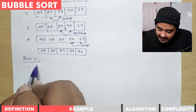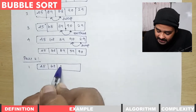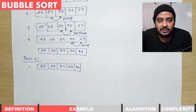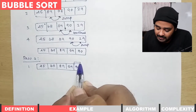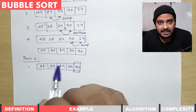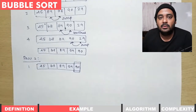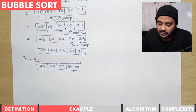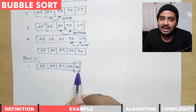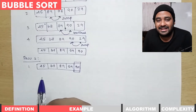For pass two, we take the sorted list from pass one: 45, 68, 89, 29, and 90. Notice that the greatest number has bubbled to its position — after each pass, the greatest number in the list moves to the end and reaches its final position, so there is no need to check it again. We only need to check the first four elements and perform three steps.